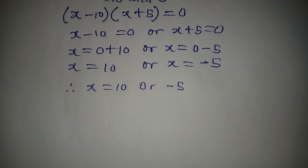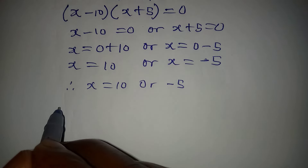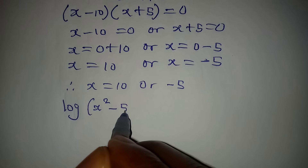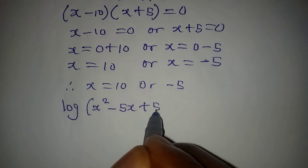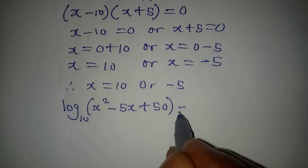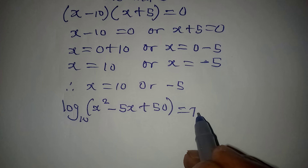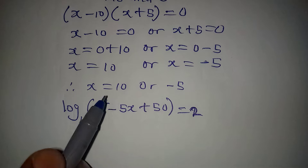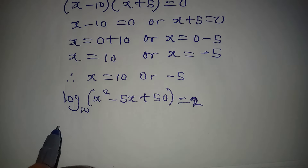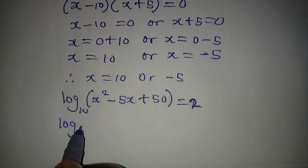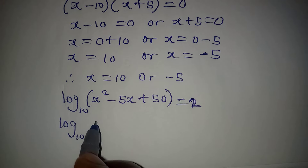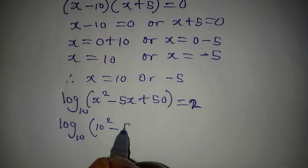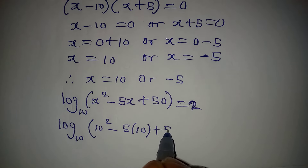Now, is there a way to check that we are correct? The original equation is log base 10 of (x² - 5x + 50) = 2. Let's confirm by substituting x = 10: we get log base 10 of (10² - 5×10 + 50).